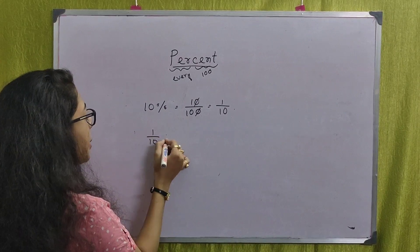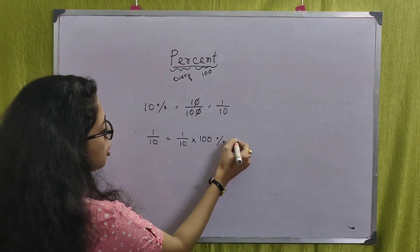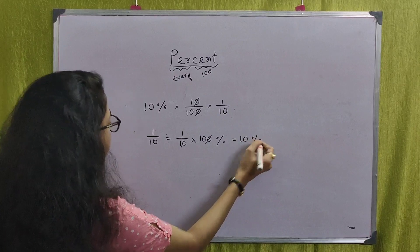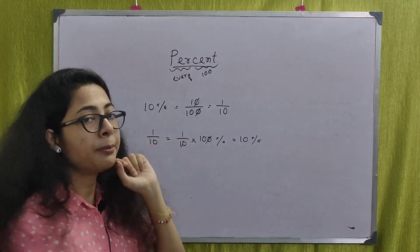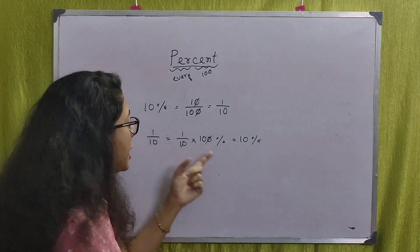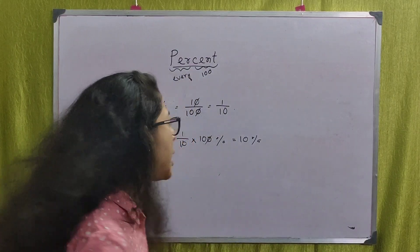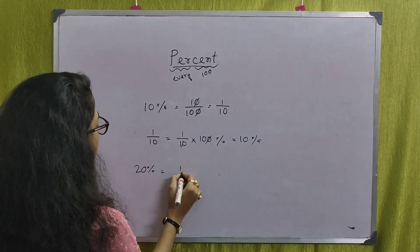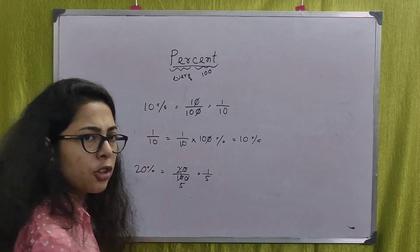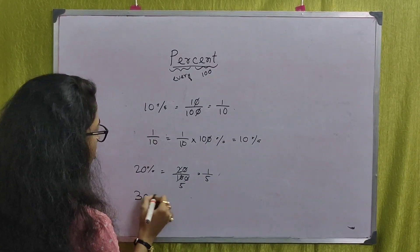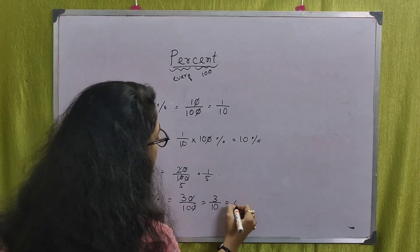When I am talking about 1 by 10, we talk about percent divided by 100. If you have a fraction, you can multiply it by 100. For example, 20% means 20 by 100, which equals 1 by 5. And 30% means 30 by 100, which equals 3 by 10, that is 0.3.